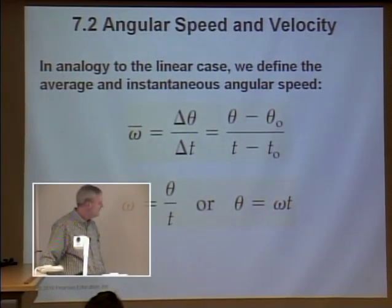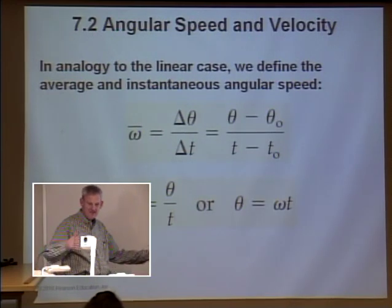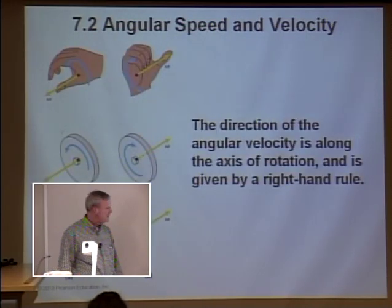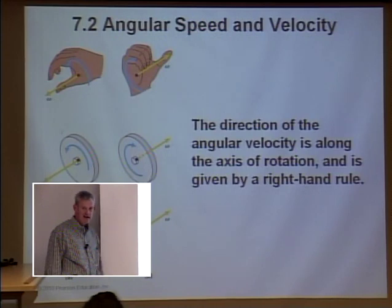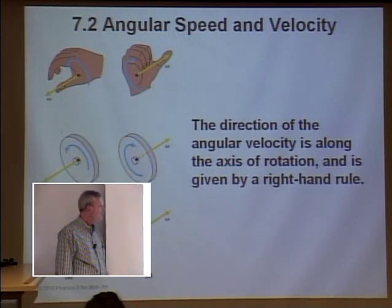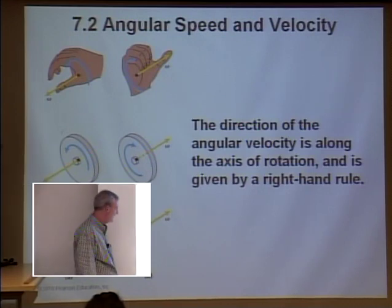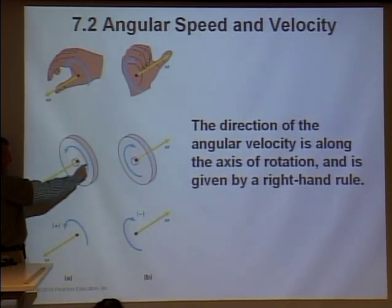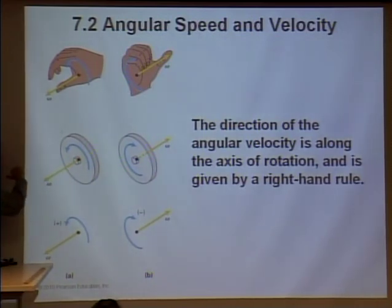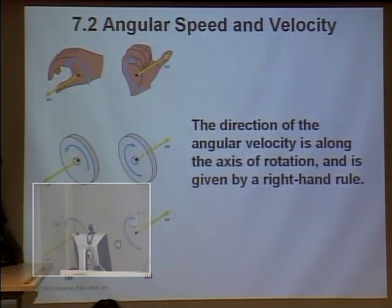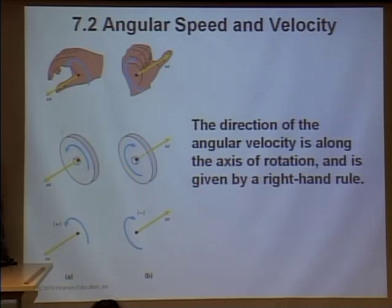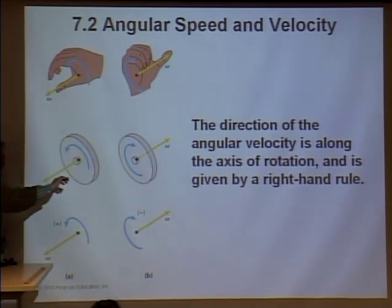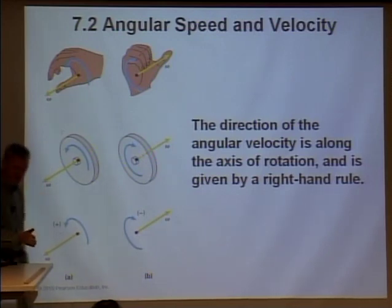The angular velocity is three-dimensional. If we're going around a disk, the angular speed is going along the disk, but the angular velocity vector points this way — perpendicular to the plane of rotation. Think righty-tighty, lefty-loosey. If it speeds up, the angular acceleration vector goes the same direction as the angular velocity vector.